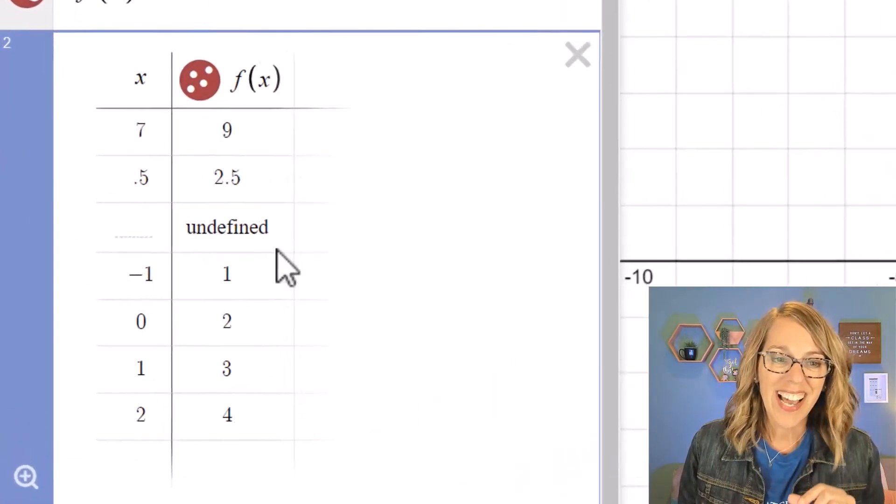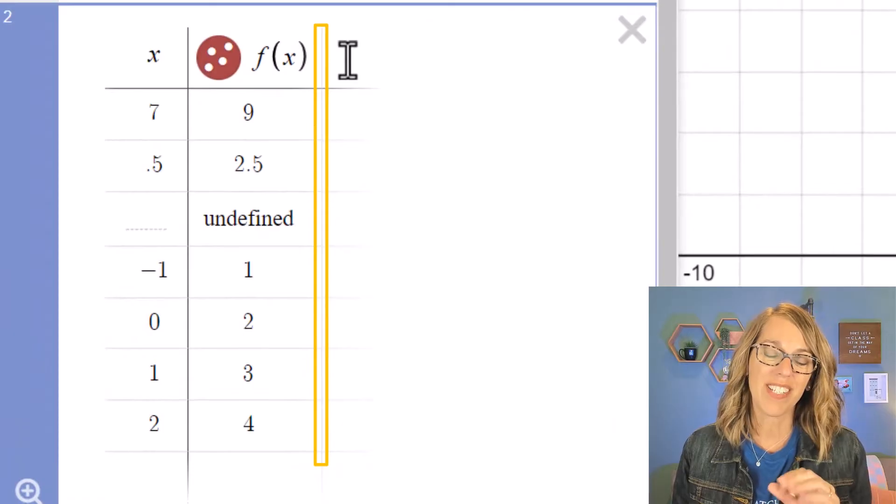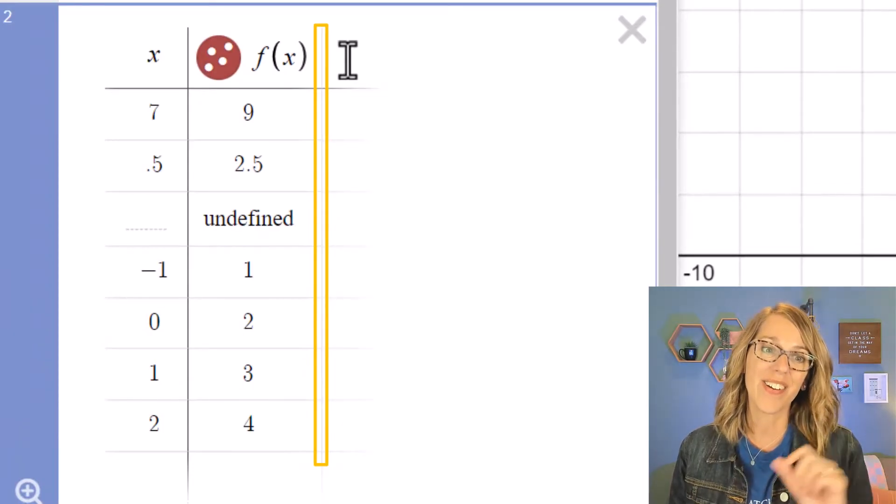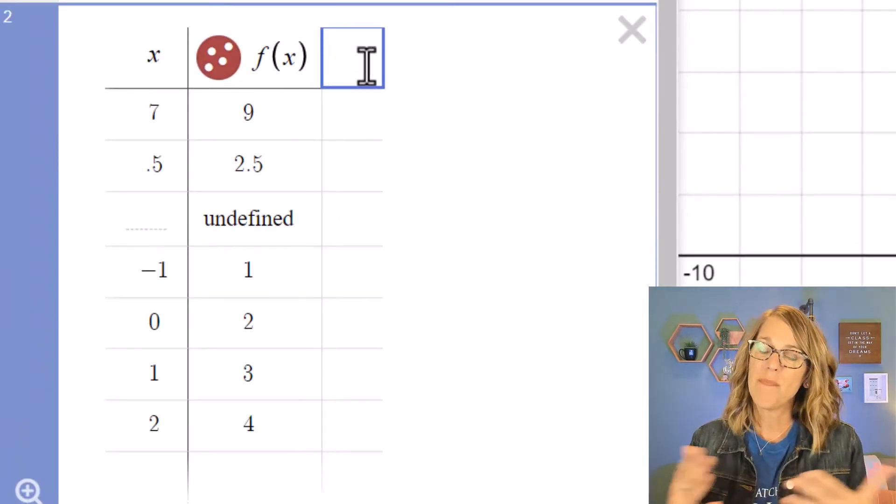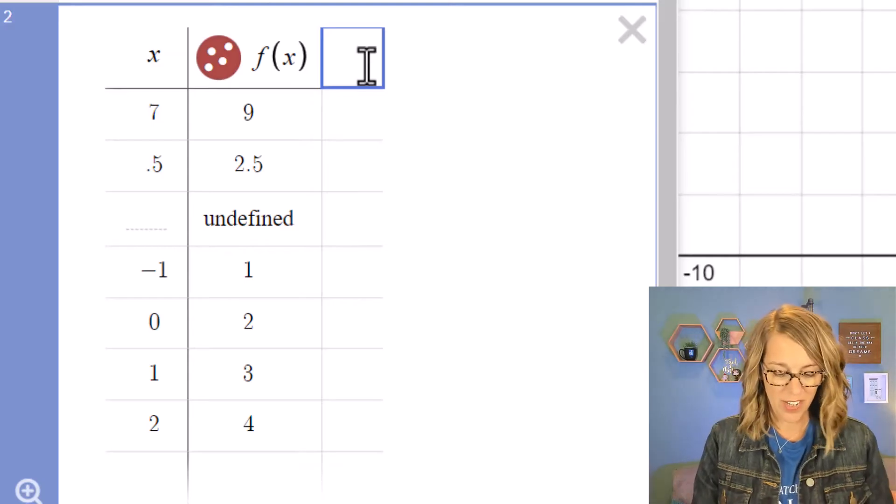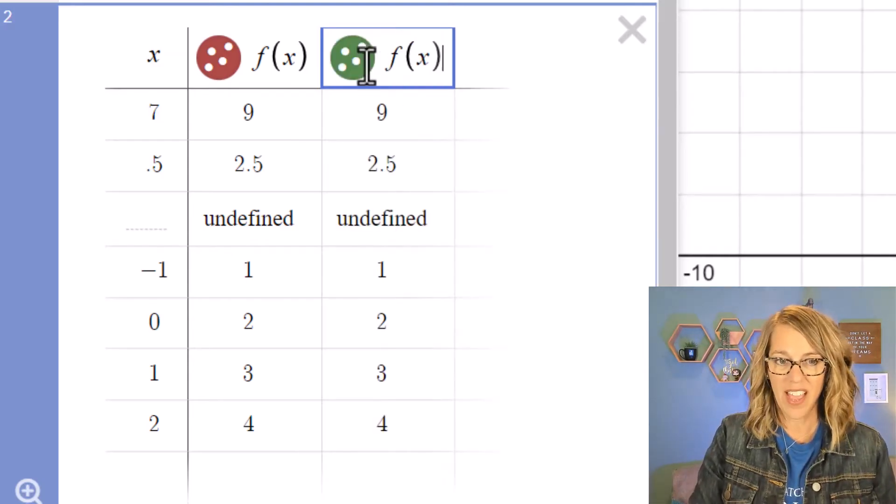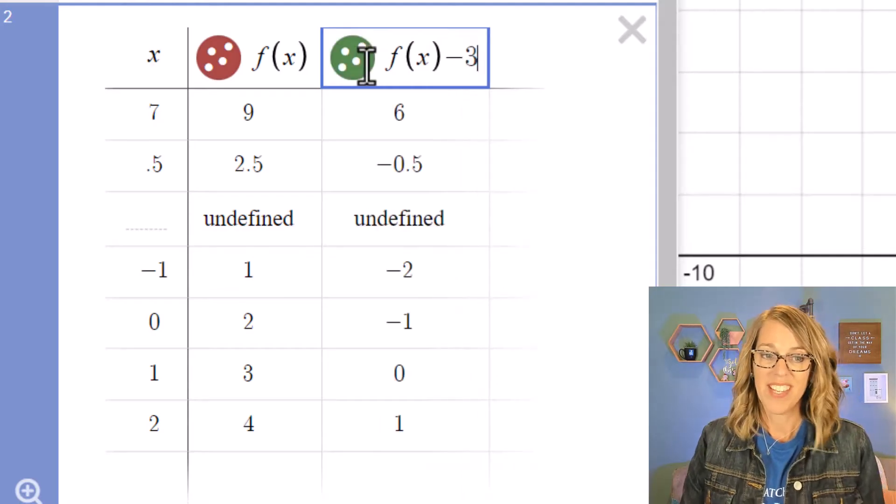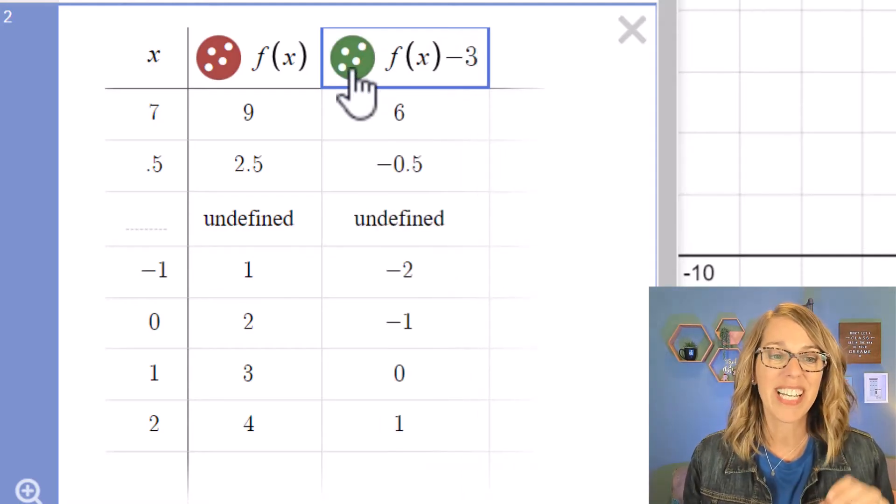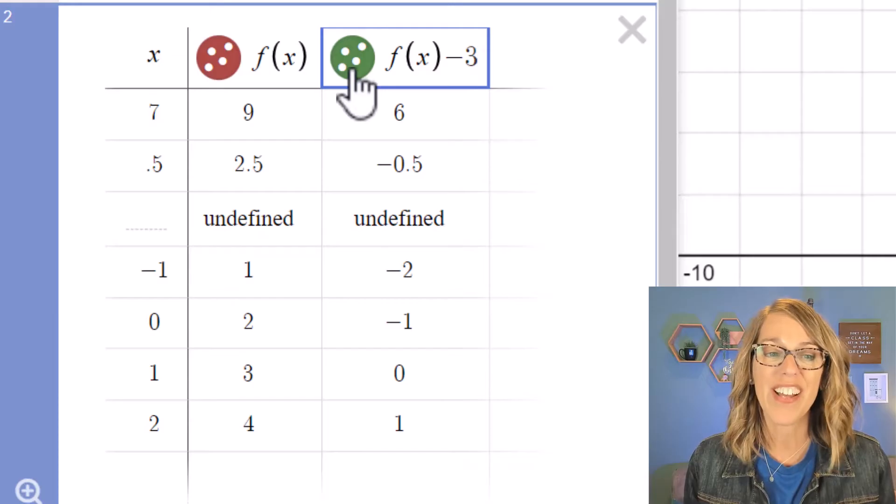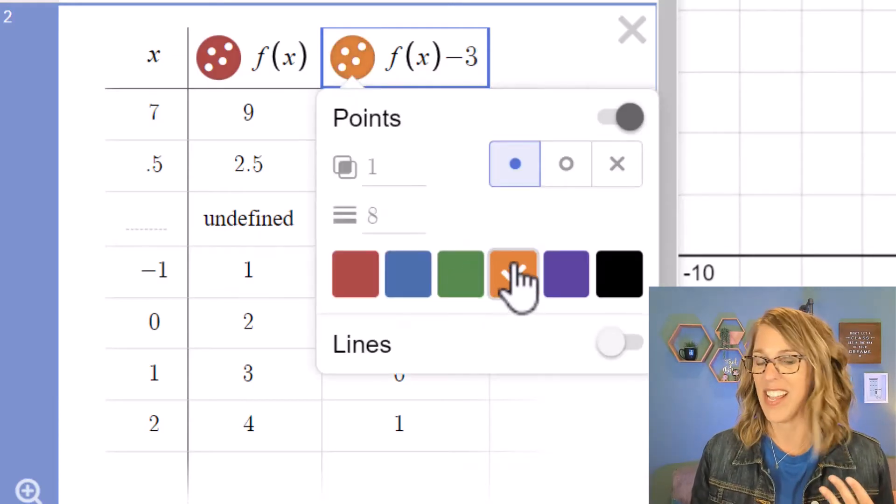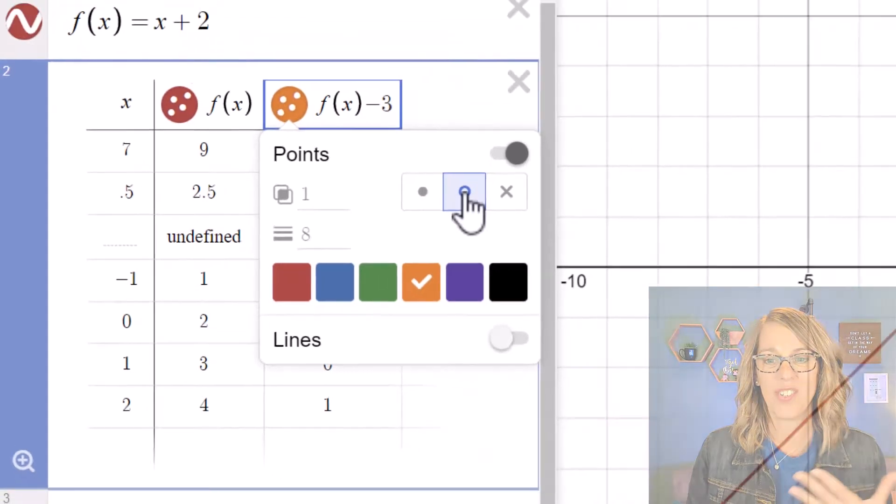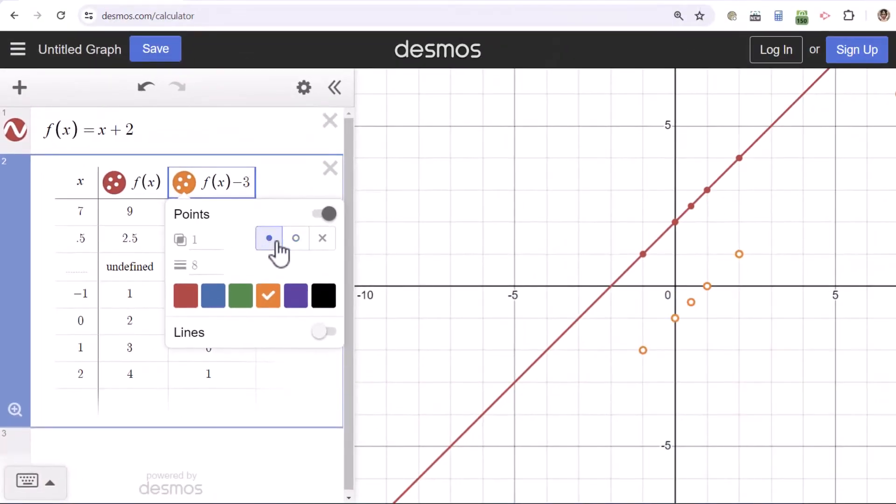See this line right here. This line right here means that you can add another piece of your function. Maybe you're learning about algebra of functions and you want to do f of x minus three. Maybe you want a different color. You can click and hold on the color circle and then you can change it to any color you want.